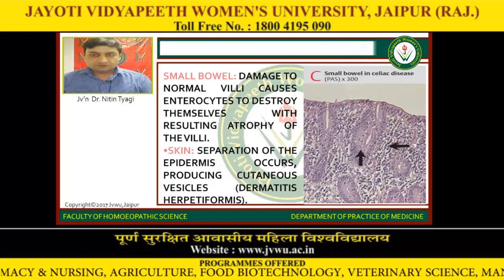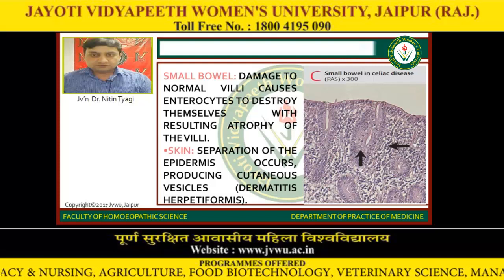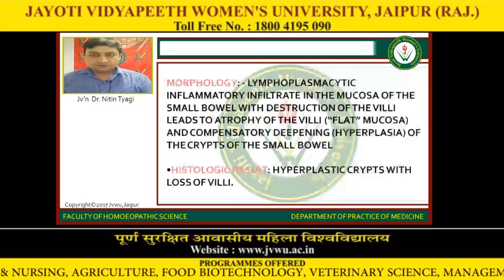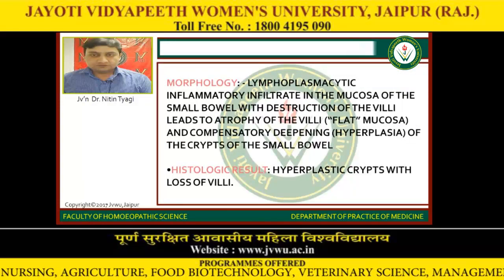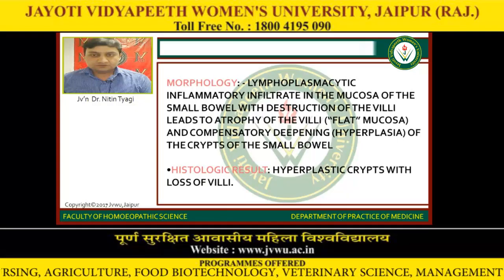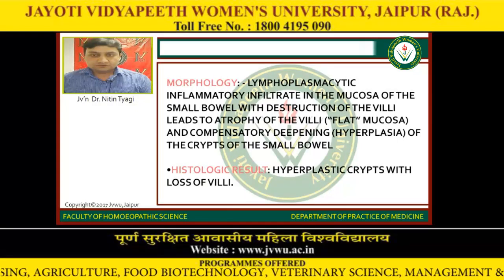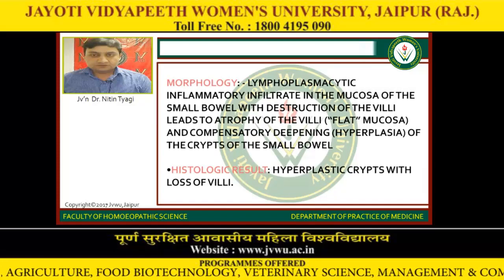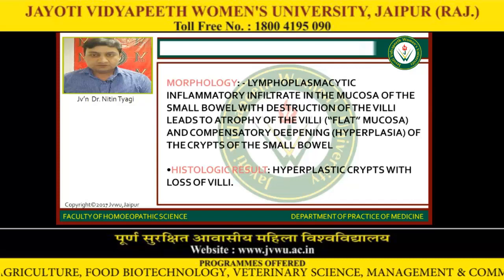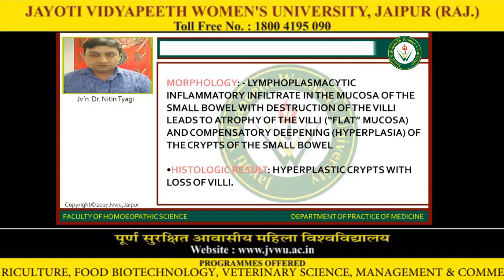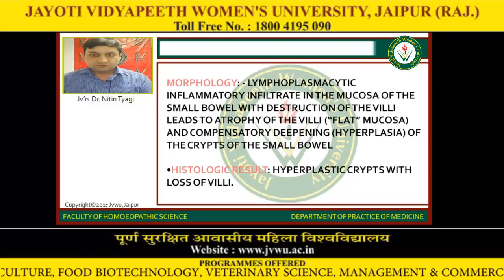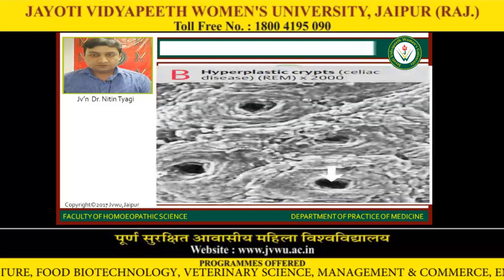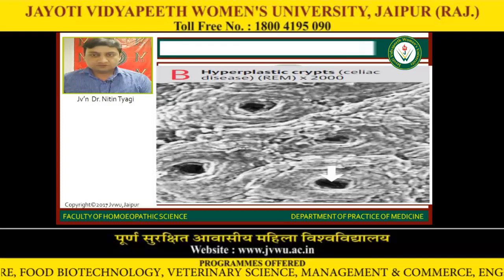In the skin, separation of the epidermis occurs, producing cutaneous vesicles — dermatitis herpetiformis. Morphology: there is a lymphoplasmacytic inflammatory infiltrate in the mucosa of the small bowel, and destruction of the villi leads to atrophy of villi or flat mucosa, and compensatory deepening or hyperplasia of the crypts of the small bowel. Histological results show hyperplastic crypts with loss of villi. These are the crypts which are deepened in celiac disease.